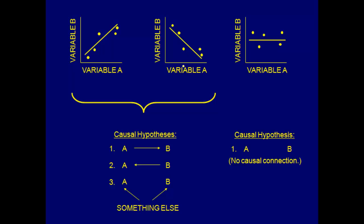Here, as variable A increases, variable B tends to decrease. If we were to move through the individuals in our data set and look at the pattern, we would see that variable A and variable B in the first instance are moving together up and down, and in the second instance they're moving in opposition to each other. In both situations, we can hypothesize one of these causal relationships between variable A and variable B as the reason behind the association we see.